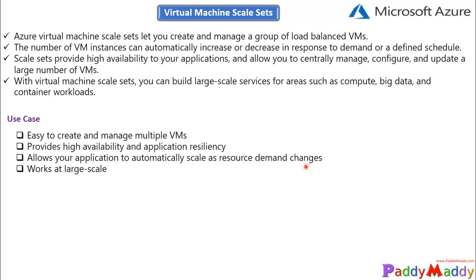That feature is called auto scaling, which we're going to demonstrate after this introduction to virtual machine scale sets. The third use case — works at large scale — means it can support from 1 to 1,000 VM instances. If you want to spin up 1,000 instances of a similar marketplace image, you can do it. However, if you're using your own custom OS image with your own applications, there is a limitation of 600 instances.